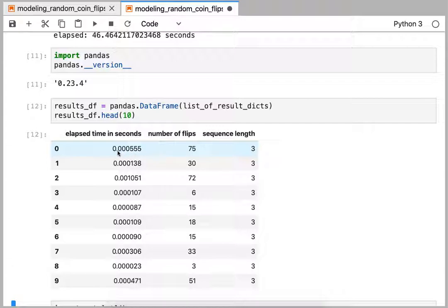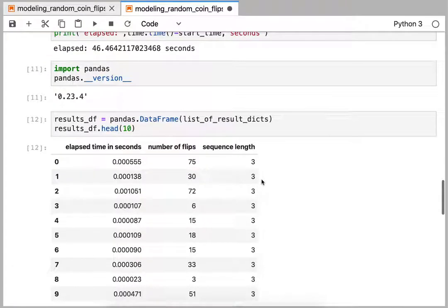And here we see for some random sequence of length three, it took 75 flips to find a match, and that execution ran in 0.0005 seconds. Then we did another experiment to find another random sequence of length three, and this time it only took 30 coin flips to find a match. And we just kept doing this for a really long time for a lot of experiments.